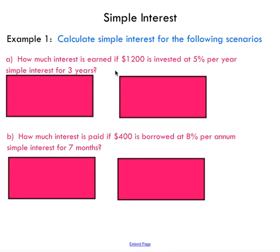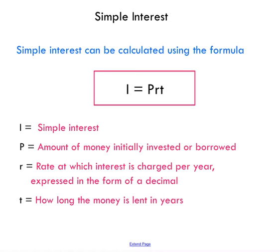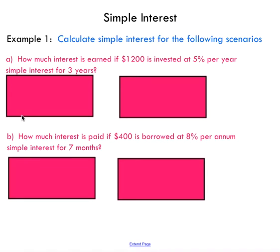So how much interest is earned if $1,200 is invested at 5% per year, simple interest, for three years? Our goal here is to just pick out all of the information that we need to work with the simple interest formula.